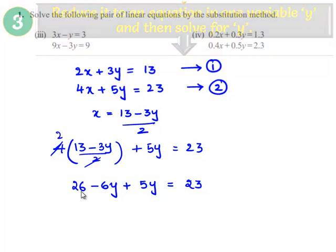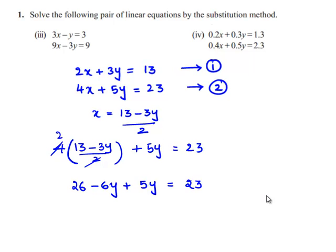Now, let us transpose 26 to the right hand side. We will be getting -6y + 5y = -y = 23 - 26. This implies -y = -3. So minus and minus will be cancelled. We will be getting y = 3.